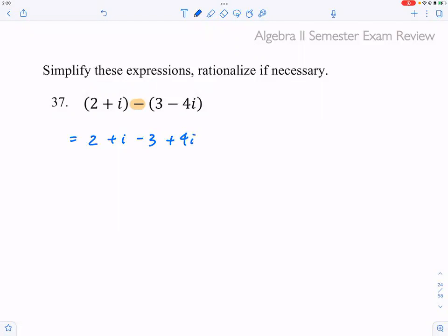All that's remaining is negative 1—well, 2 minus 3 is negative 1—and then plus i plus 4i, you have plus 5i. And that's it.